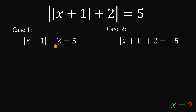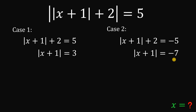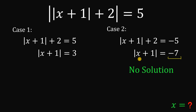What we're going to do is subtract 2 on both sides. In case 1, we get absolute value of x plus 1 equals 3. In case 2, subtracting 2 on both sides gives us absolute value of x plus 1 equals negative 7. Notice that this is not possible, because absolute value — the distance of a number to 0 — is always positive. So we don't get any possible values of x in case 2. This case is not possible.